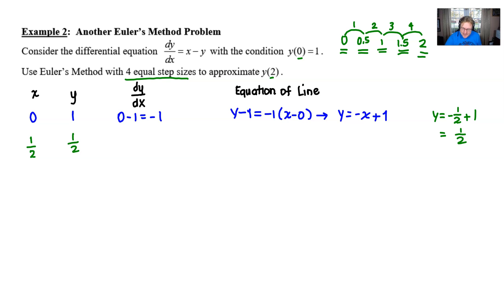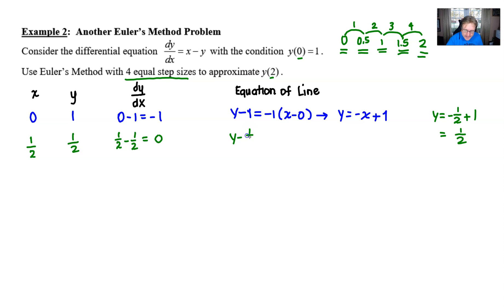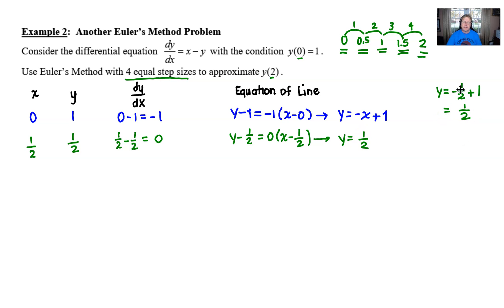We'll find our new slope using x = one half and y = one half, which interestingly gives us a slope of zero — one half minus one half equals zero. So the tangent line equation is y minus one half equals 0 times (x minus one half), which results in y equals one half.